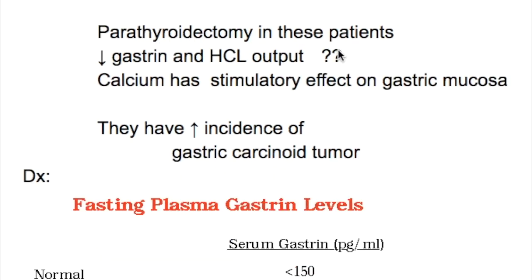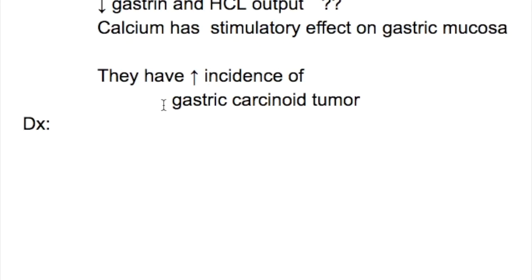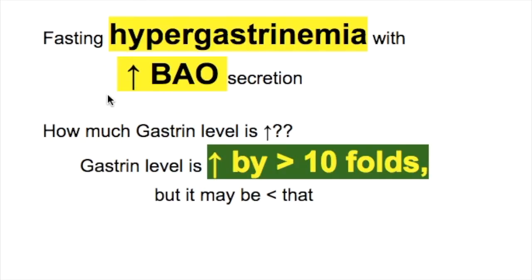Parathyroidectomy in MEN type 1 patients decreases gastrin and HCl output because calcium has a stimulatory effect on gastric mucosa, and these patients have parathyroid adenomas. These patients also have an increased incidence of gastric carcinoid tumors.